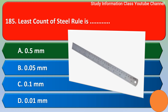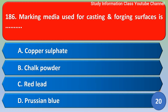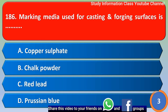Next question: the marking media used for casting and forging surfaces is option A copper sulfate, option B chalk powder, option C red oxide, option D Prussian blue. The correct answer is option B: chalk powder is the marking media used for casting and forging surfaces.